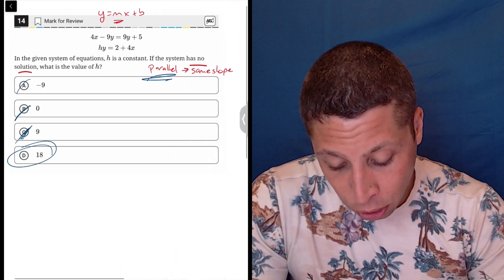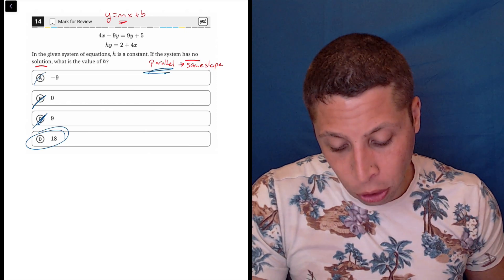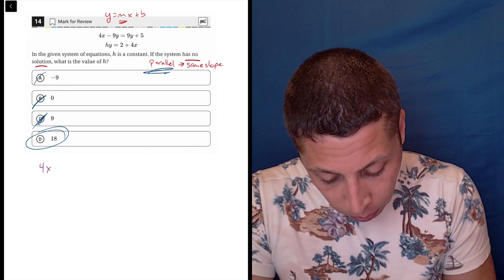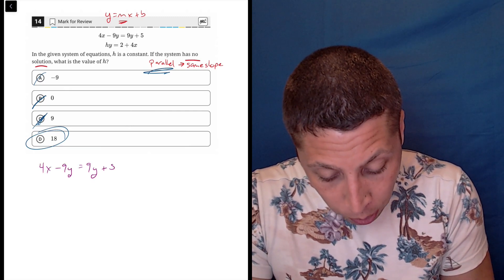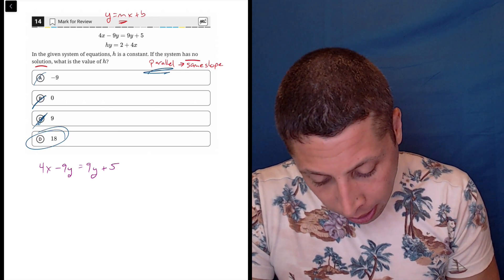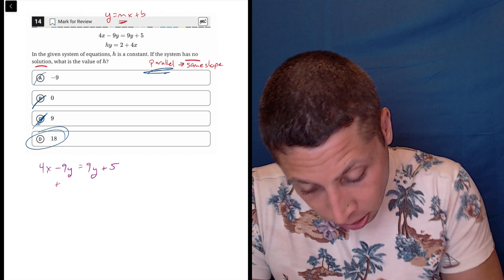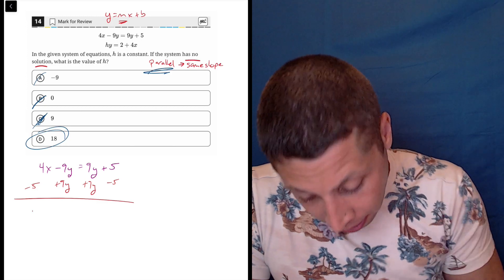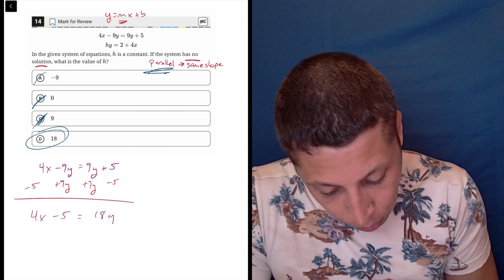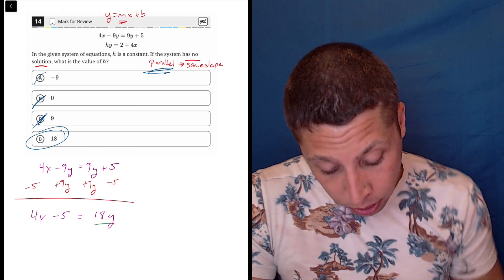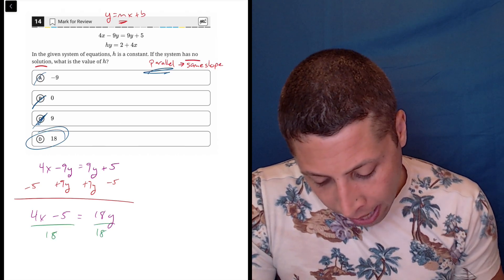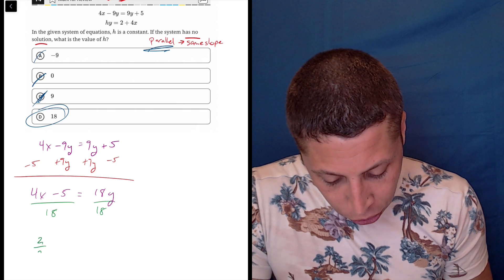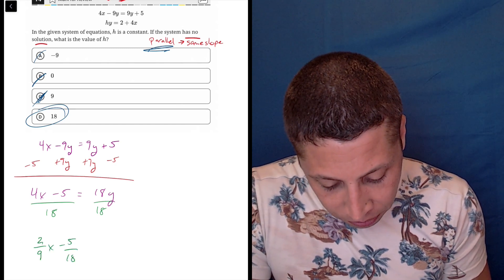If this was difficult, let me show you the other way. Maybe this will be easier. What we would need to do is turn both of these equations back into y equals mx plus b form. So the top one obviously is pretty jumbled. So I have 4x minus 9y is equal to 9y plus 5. So I'm going to bring all the y's together. Let's add 9y and subtract 5. So I'm going to get 4x minus 5 is equal to 18y. But when I say y has to be alone, it really has to be alone. So we got to divide by 18.